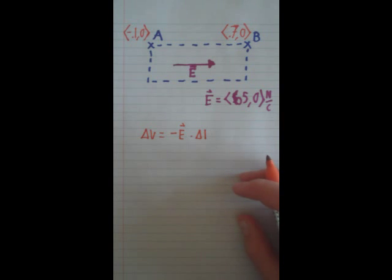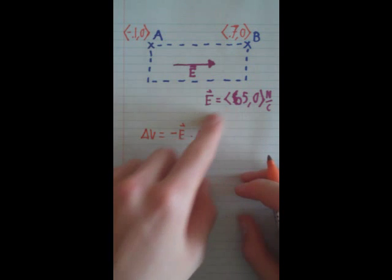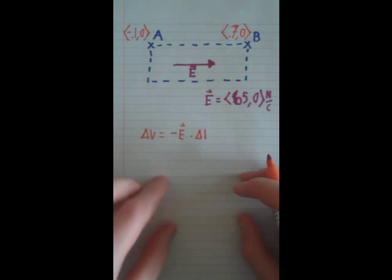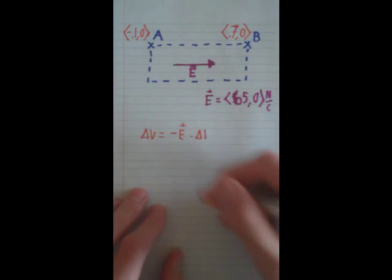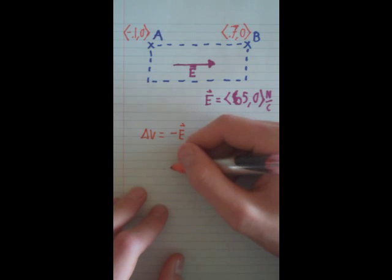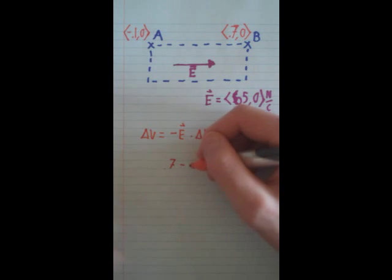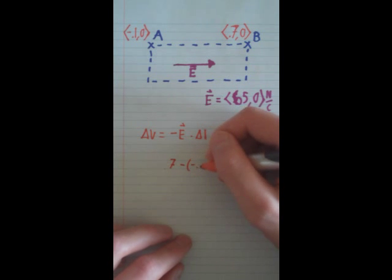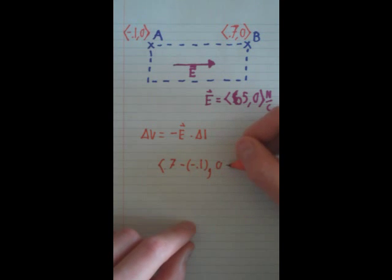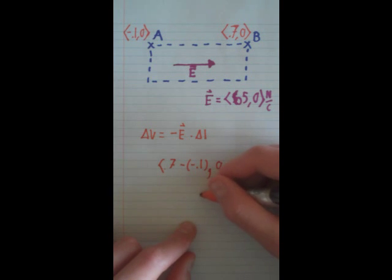All we have to do is we already have the electric field, we just need to find delta L. If we're trying to find it from A to B, we just do final minus initial. For the X direction, 0.7 minus negative 0.1. And for the Y direction, 0 minus 0. So our delta L is going to equal 0.8 and 0.